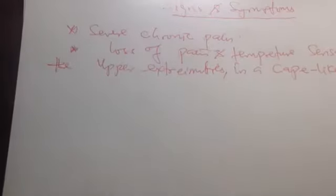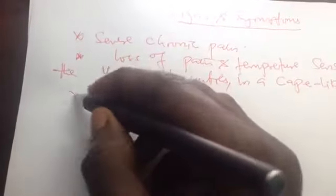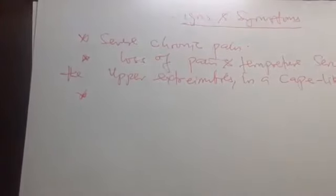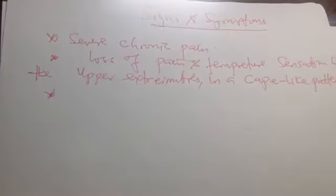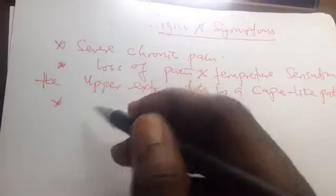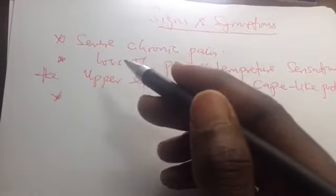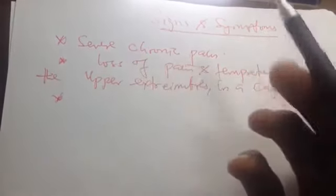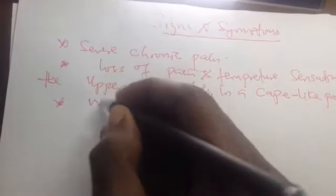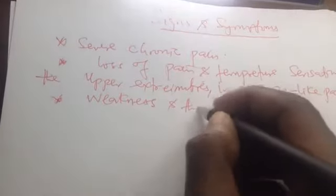The next symptom is paralysis. As the cyst expands, it will also affect the lateral corticospinal tract, which makes our limbs move. When they are destroyed, the limbs cannot move, so the patient can complain of weakness and paralysis.